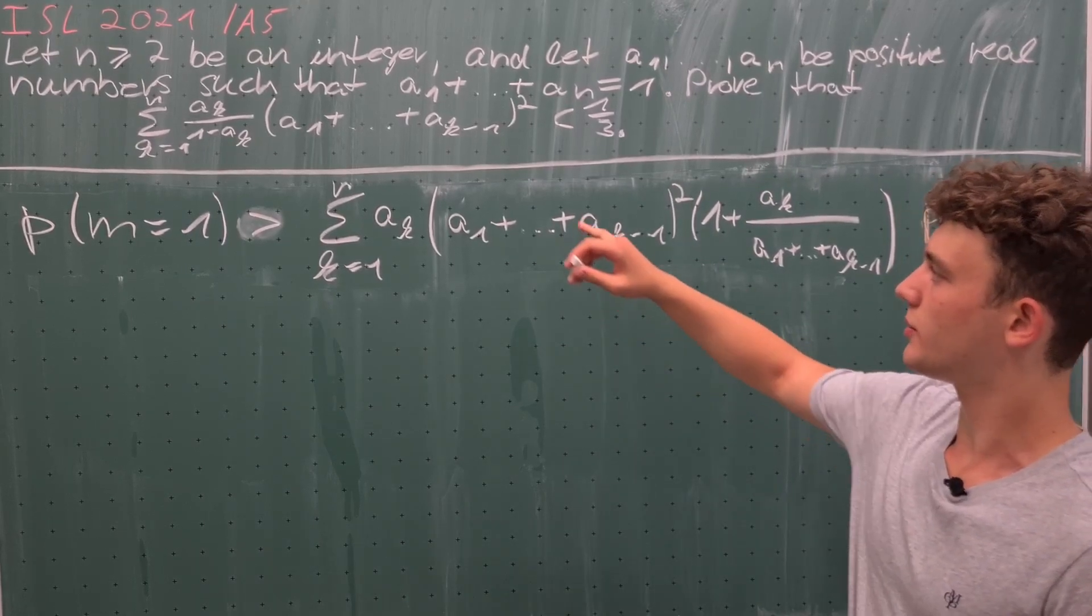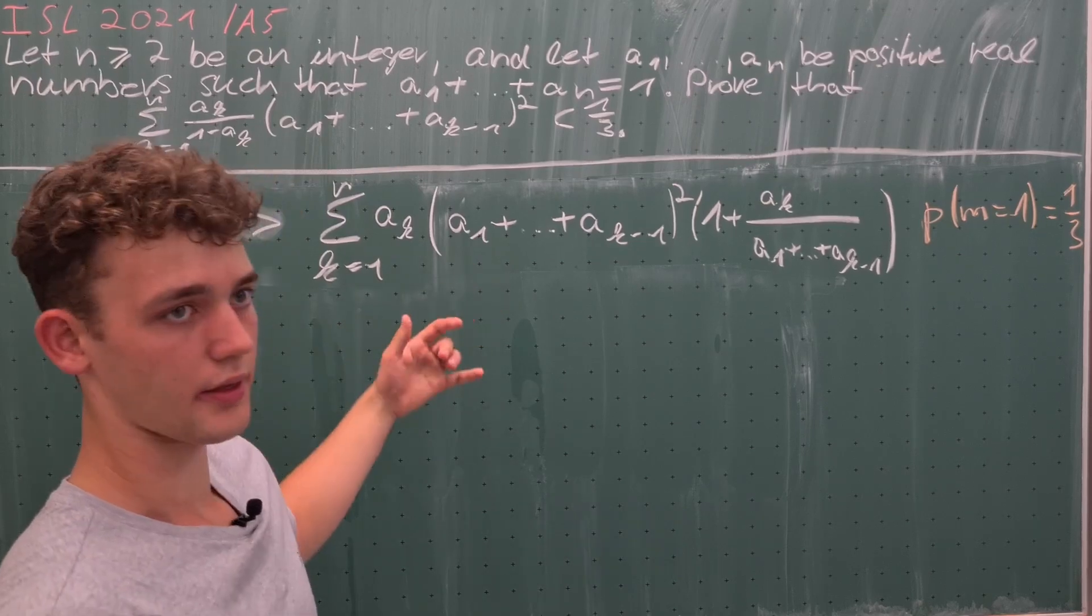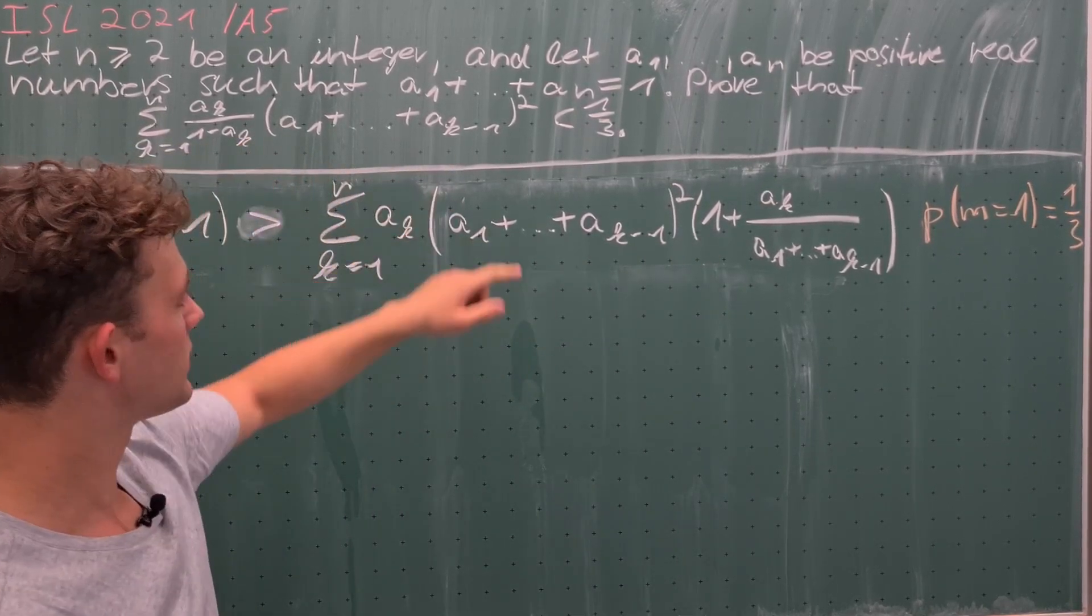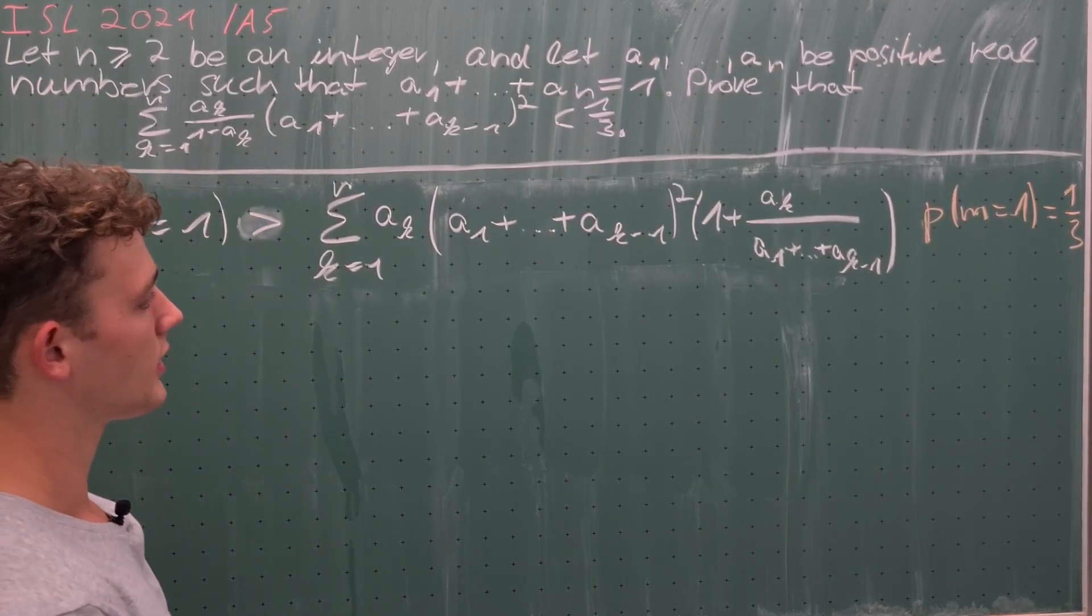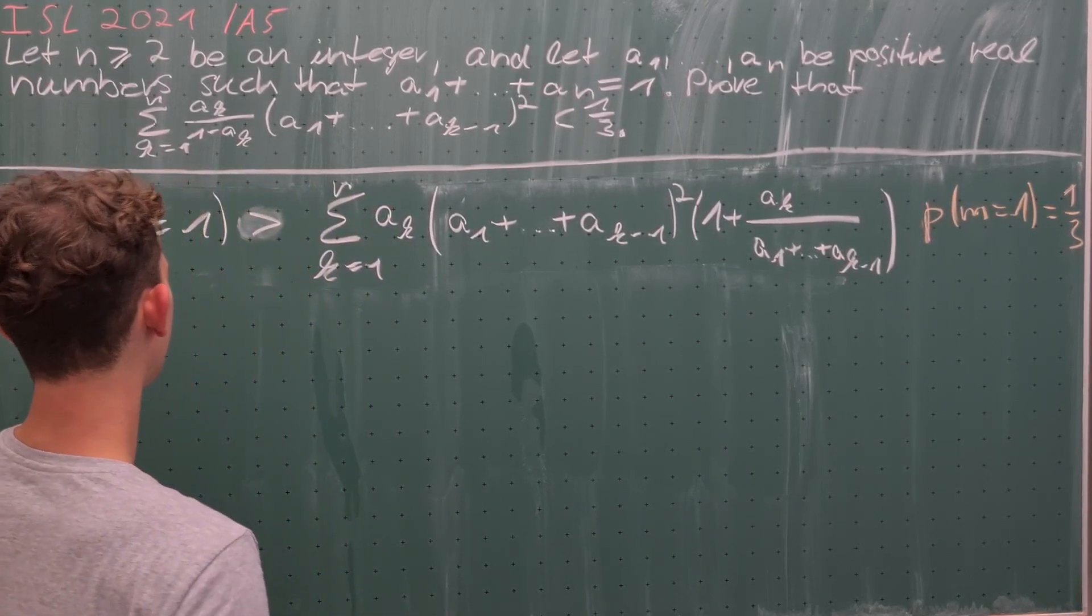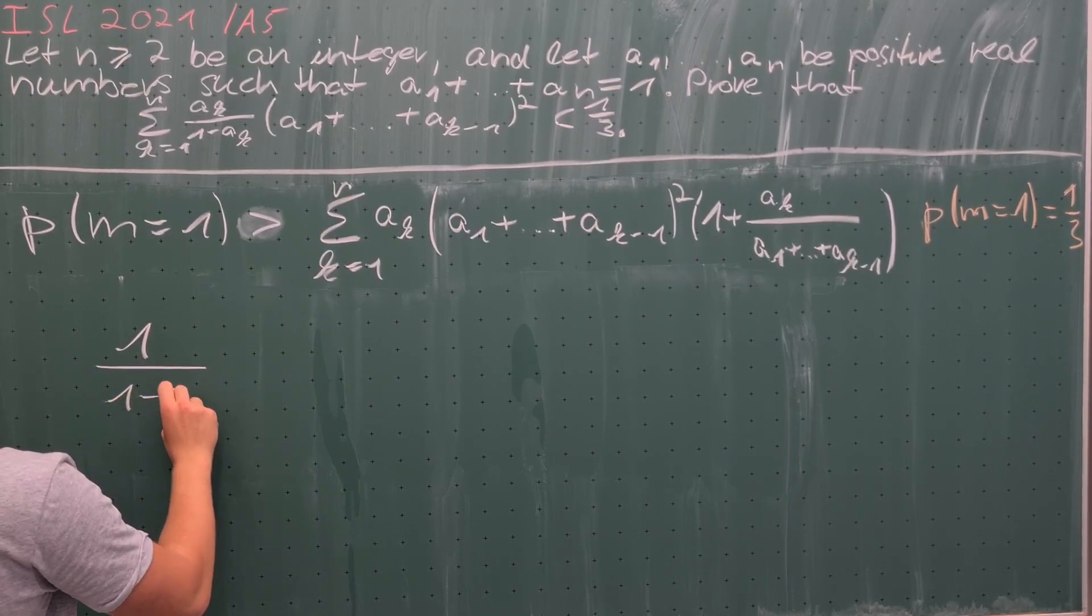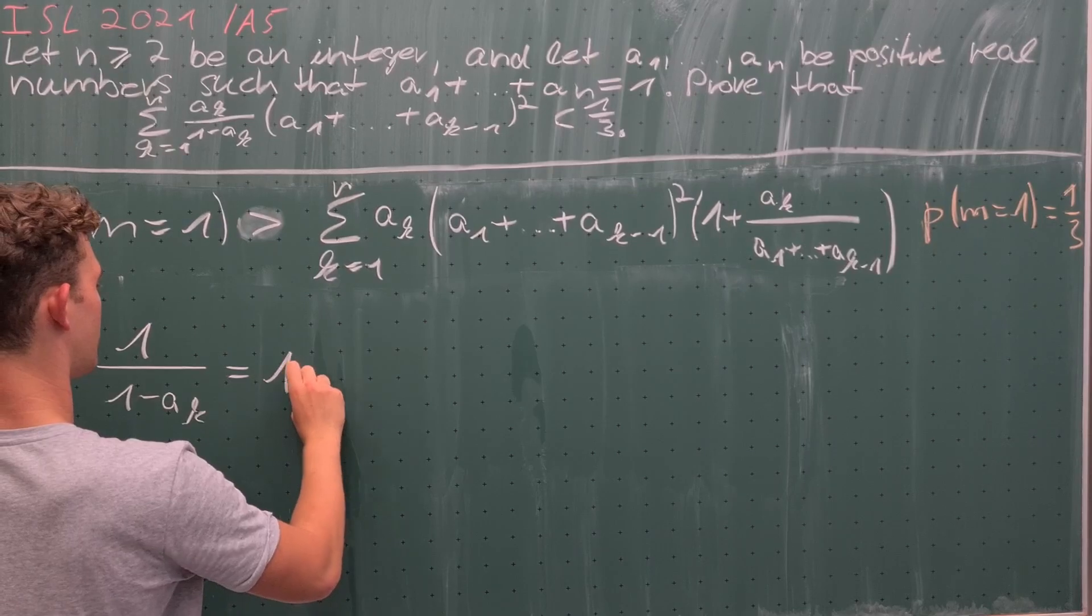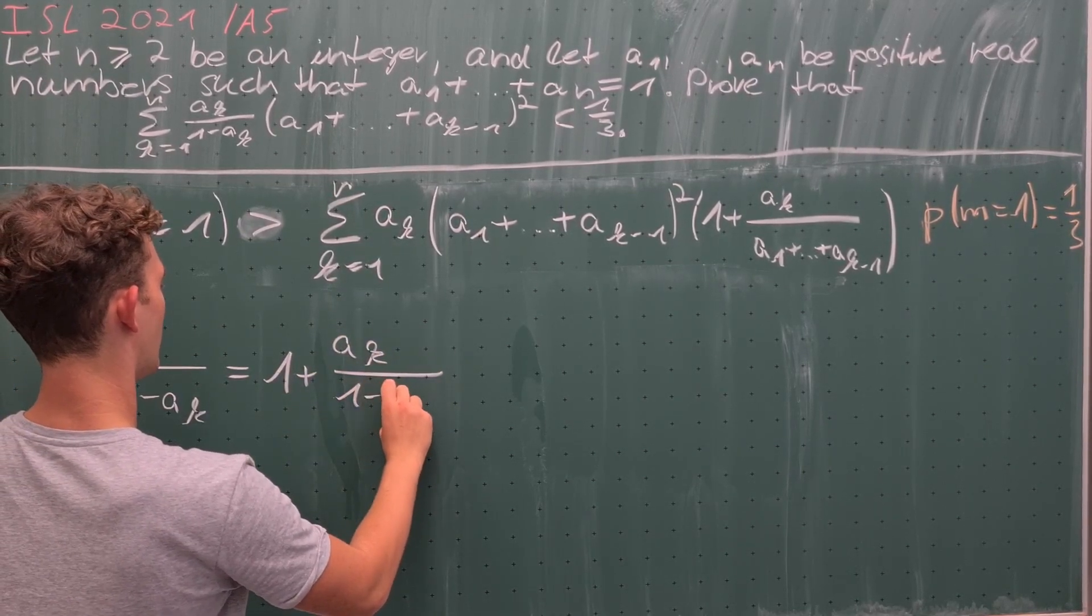So we have already established that the probability of m equaling one is exactly one third. We also know this inequality holds. We now need to bound this from below by that term to finish our proof. We see that the difference between, or rather the quotient between each of these sums to these ones, is only the one divided by (1 minus a_k). And that term we can compare those easily because 1 divided by (1 minus a_k) is equal to 1 plus a_k divided by (1 minus a_k).